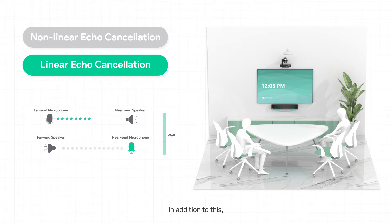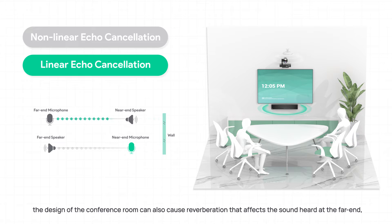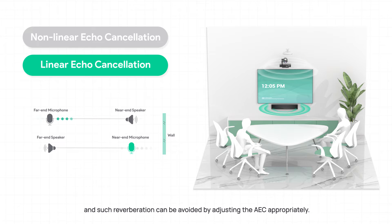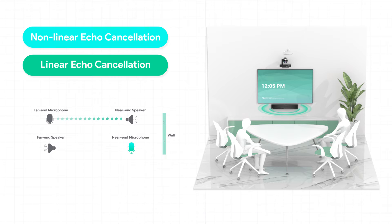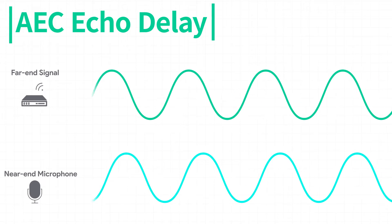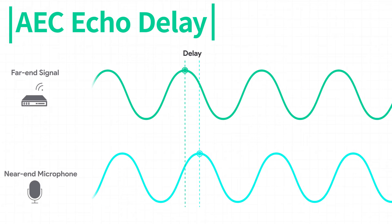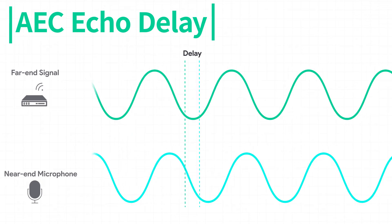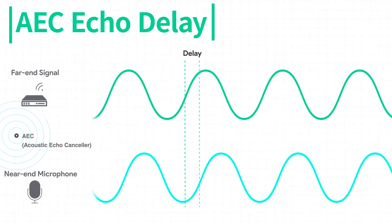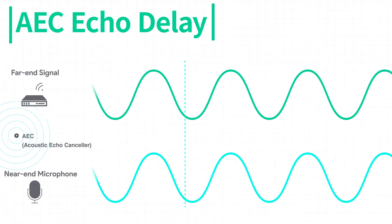In addition to this, the design of the conference room can also cause reverberation that affects the sound heard at the far end. Such reverberation can be avoided by adjusting the AEC appropriately. The system automatically adjusts the echo delay to reduce the echo caused by the conference room environment as well as signal transmission.